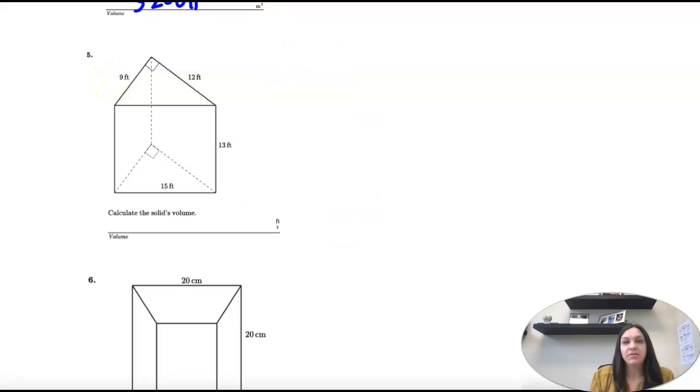So number five is asking for the volume. For volume we need to take the base area times the height. The height is 13 and the base is a right triangle.